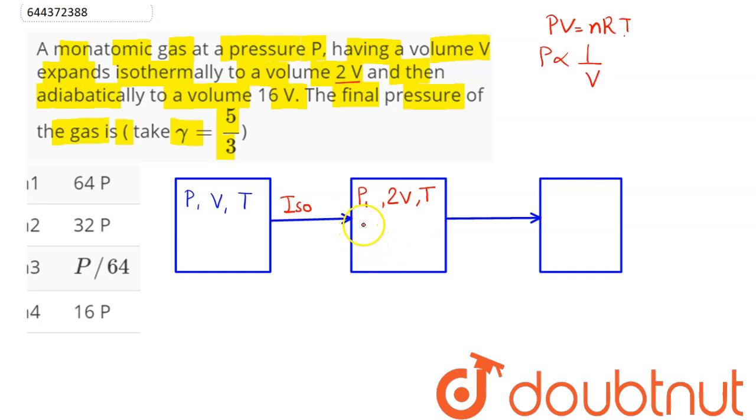Hence if we increase the volume to 2 times, pressure will decrease to 2 times. That is P1 will be equal to P divided by 2, that is pressure decreases by a factor of 2.